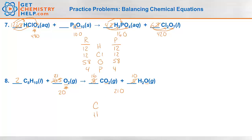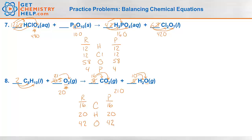Let's verify: two times eight is sixteen carbons on the reactants; sixteen on the products. Two times ten is twenty hydrogens on the reactants; ten times two is twenty on the products. Twenty-one times two is forty-two oxygens on the reactants; sixteen times two is thirty-two plus ten more is also forty-two. There we go.